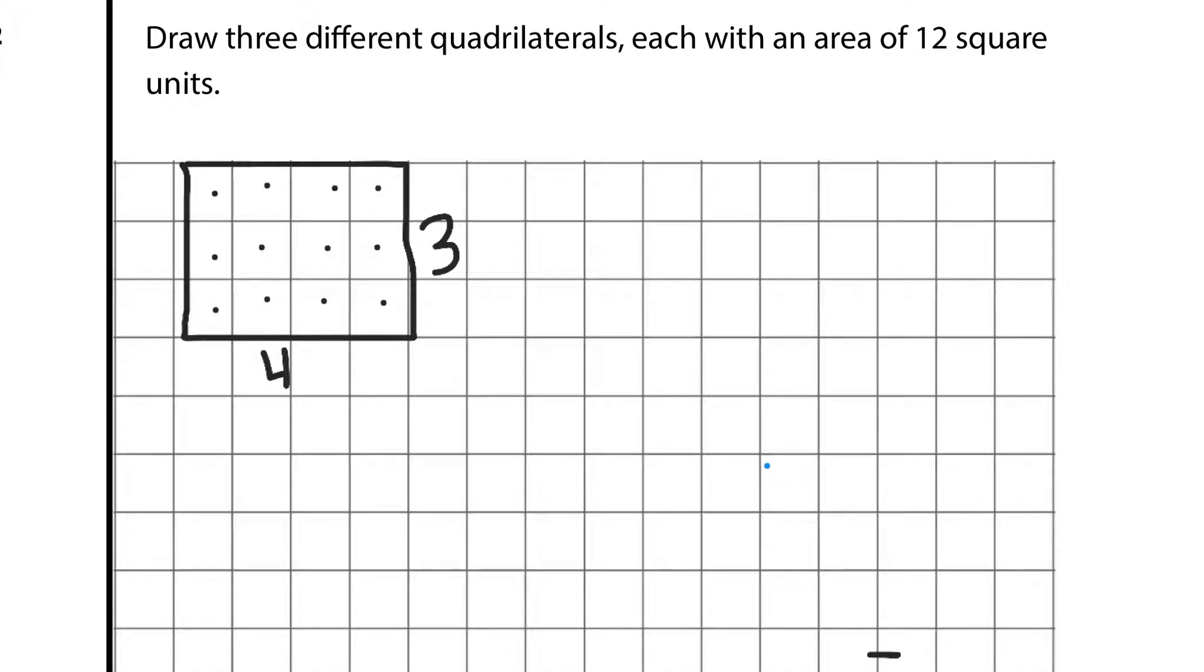Now, if we think about another type of rectangle here. If we go 2 down and 1, 2, 3, 4, 5, 6 across and complete the rectangle. We have now a 6 by 2 quadrilateral, which is a rectangle and quadrilateral. And we have 1 through 12 square units.